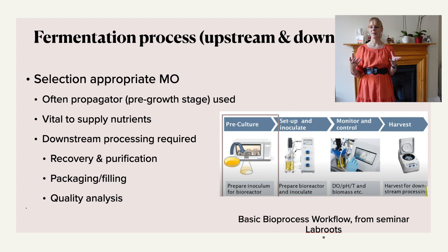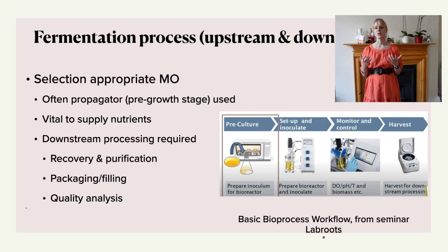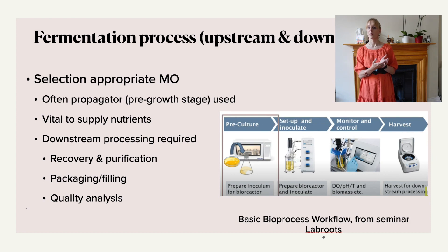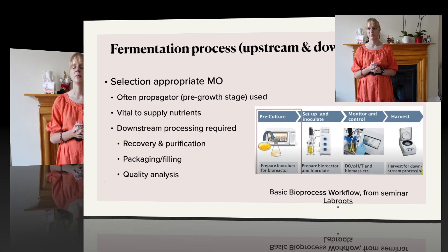The propagator can be something as small as shake flasks or a larger reactor. You then take this culture and inoculate it into a bioreactor, which is often sterilized, and start the fermentation reaction. It's very important to use sensors to control the critical process parameters — in particular, ensuring the microorganism has sufficient nutrients, controlling oxygen content if it's an aerobic process, and monitoring product formation.